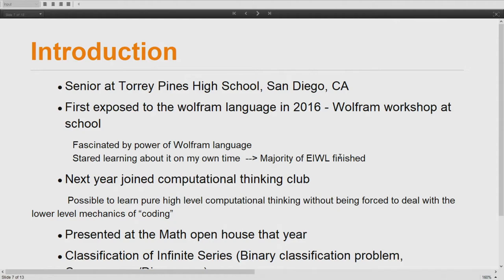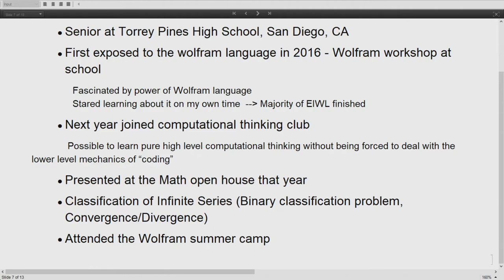I'm also a senior at Torrey Pines High School located in San Diego, California. I was first exposed to the Wolfram language in 2016, the year my teacher decided to start the Wolfram workshops at school, which focused on the fundamentals of the Wolfram language. I was fascinated by its power and started learning on my own time — I was able to finish a majority of the Elementary Introduction to the Wolfram Language book. The following year the club transitioned to the Computational Thinking Club, focusing on applications of computer science. I thought it was cool to learn high-level computational thinking without dealing with lower-level mechanics of coding. Liketh and I, along with one other person, presented at the math open house that year — the infinite series classification project Liketh already talked about. With my interest growing, I decided to attend the Wolfram summer camp.